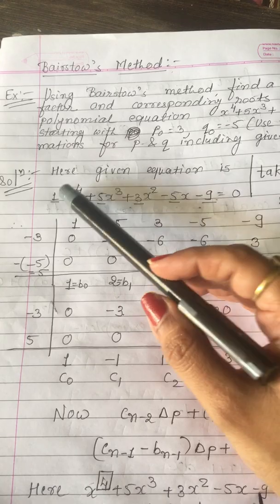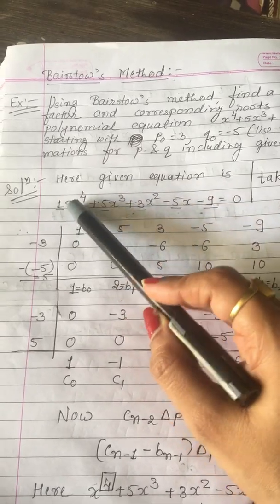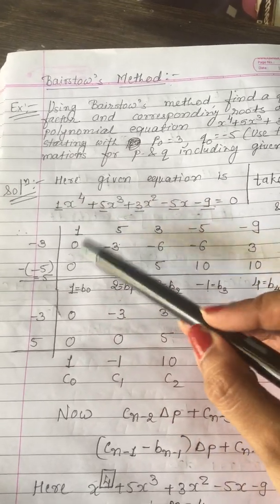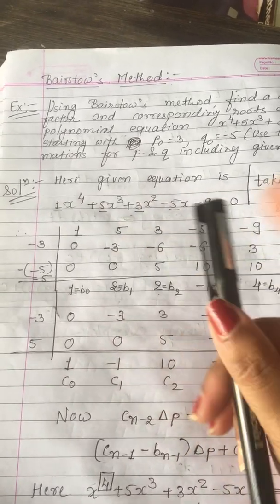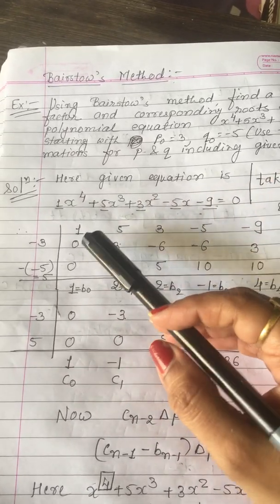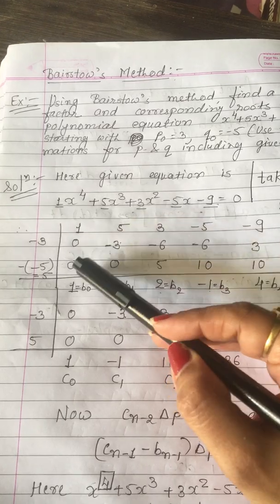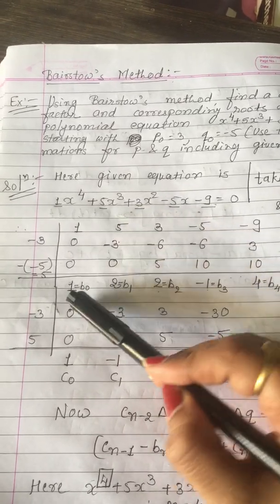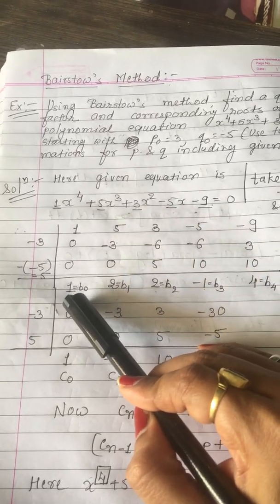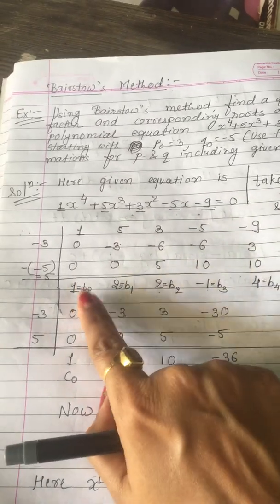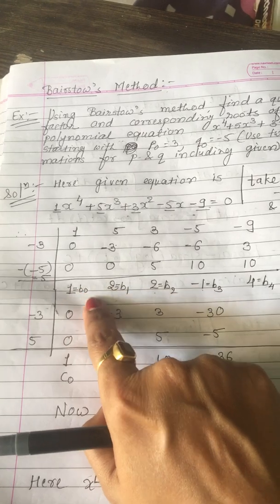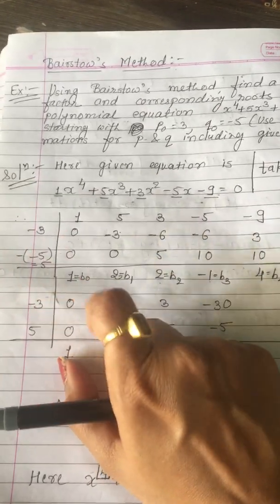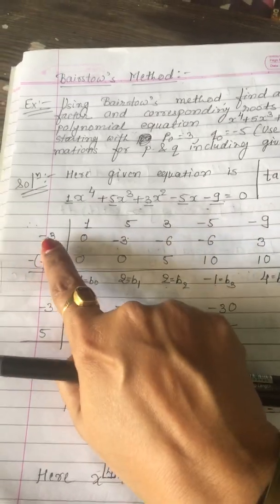We will start with your first term. Your first coefficient is 1. In the beginning, you have to take these two terms as 0, 0. The addition of these three is equal to 1, which is your B₀.